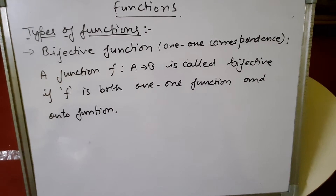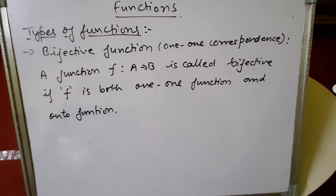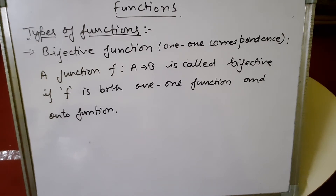Next is the bijective function, also called one-one correspondence. A function f: A → B is bijective if f is both one-one and onto. To prove a function is bijective, we first prove it is one-one and then prove it is onto. When both conditions are satisfied, the function is bijective.